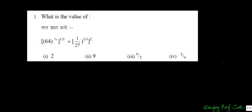If you look at this question carefully, let us first solve what is inside these brackets. This is 64 raised to power 1/2, which simply means 8 into 8 raised to power 1/2, which is equal to 8 — or what you can say, the square root of 64 is equal to 8.